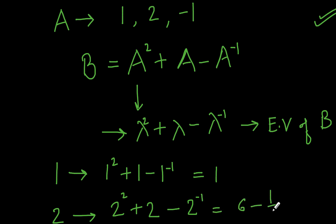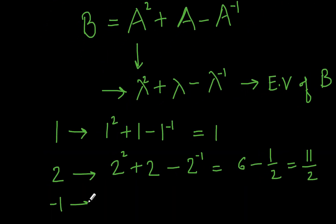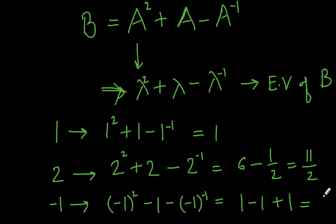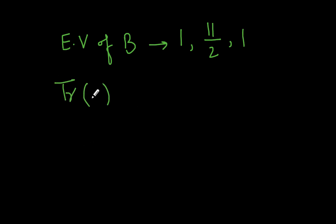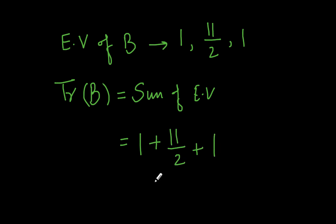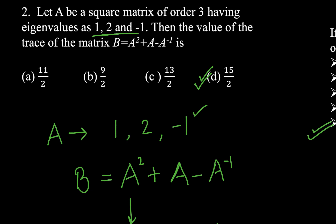For λ=-1: (-1)² + (-1) - (-1)⁻¹ = 1 - 1 + 1 = 1. So the eigenvalues of matrix B are 1, 11/2, and 1. The trace of B is the sum of eigenvalues: 1 + 11/2 + 1 = 15/2. The correct answer is 15/2.